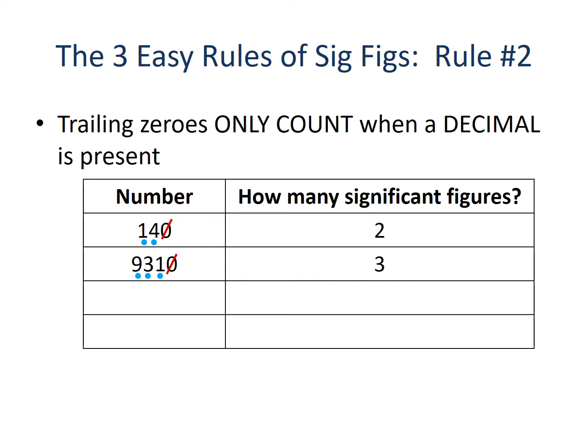If we change that number just a smidge by adding a decimal, now we have 9310 with a decimal. Rule number two says trailing zeros only count when a decimal is present. Now that we have a decimal, that ending zero becomes important. So we have a nine, a three, a one, and a zero counting towards our significant digits — four significant figures.